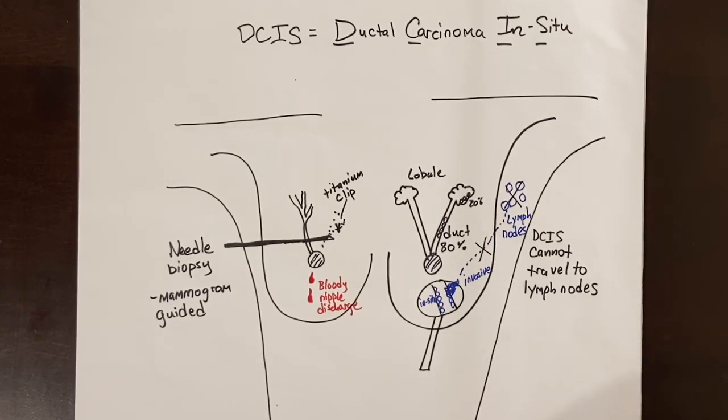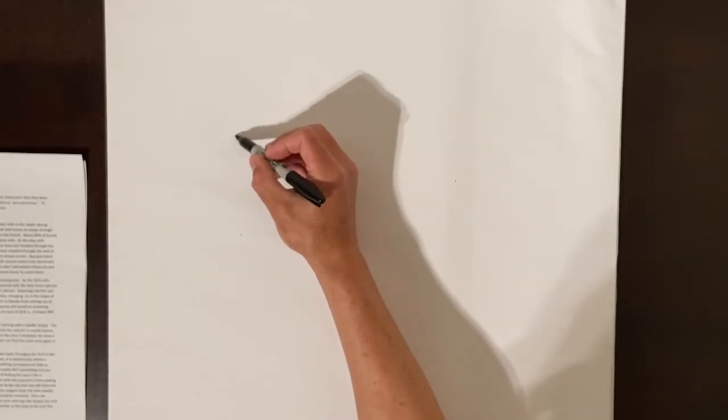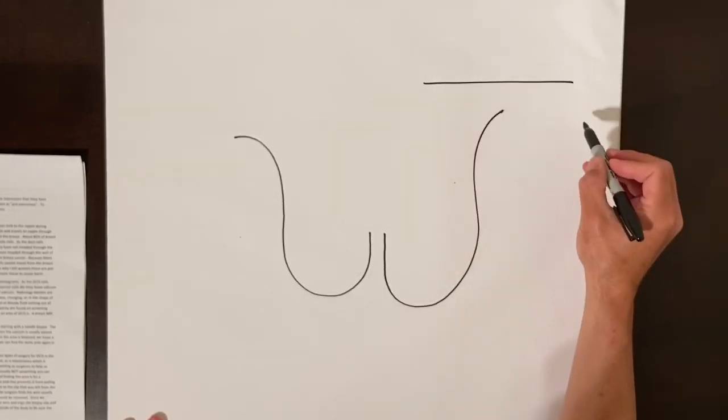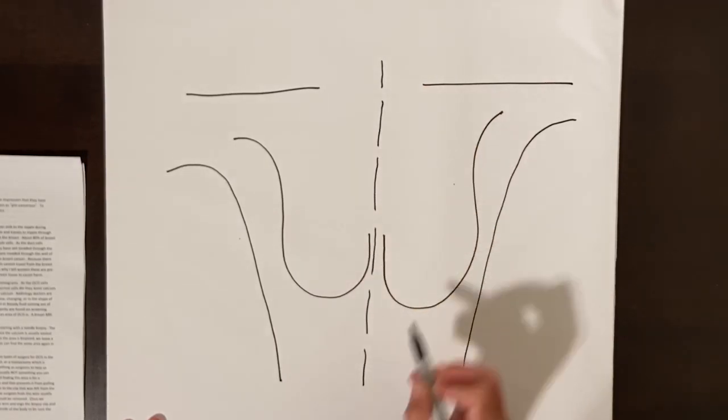Once a biopsy shows DCIS, the first treatment is surgery. There are two types of surgery for DCIS in the breast. Either a lumpectomy, which is removing a portion of the breast, or a mastectomy, which is removing the entire breast.